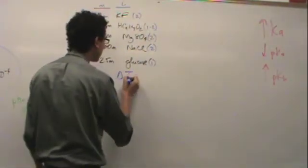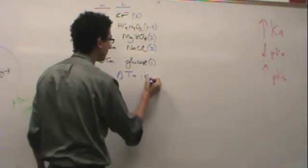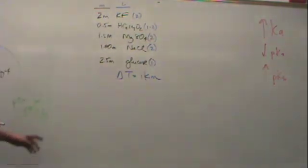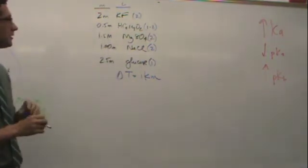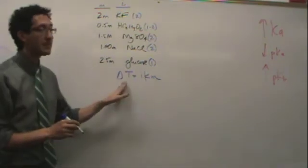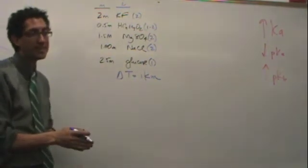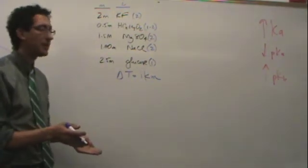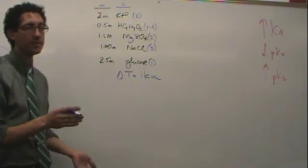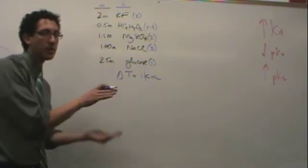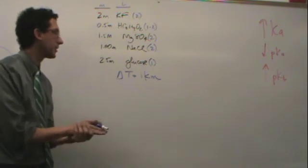Freezing point has to do with this kind of formula here. We have I, we have M, we want to find delta T. Basically, whichever one has the largest delta T is going to be the one with the lowest freezing point, because it's dropping the most below the freezing point.